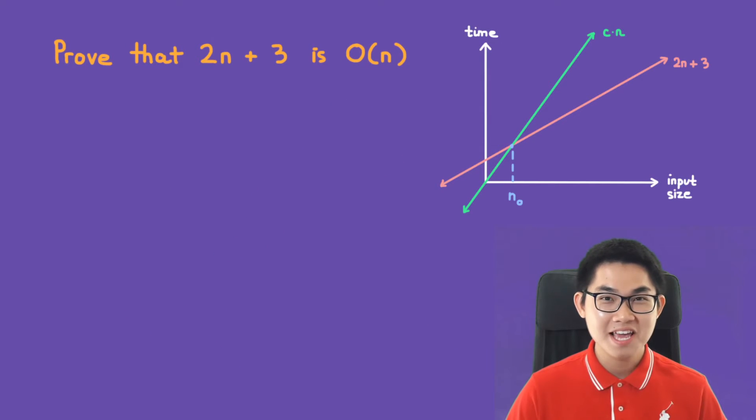You might be wondering, can we just pick c to be 3? Because a slope of 3 will grow faster than a slope of 2. And the answer is absolutely yes, but there is a standard way to find c and I'm going to show you how to do it.